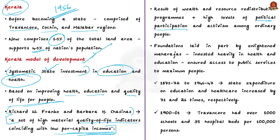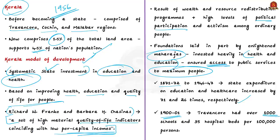The foundations of this holistic development model were laid in part by the enlightened Maharajas of the Kerala region, who invested heavily in health and education and ensured access to public services for maximum people. Between 1871-72 and 1946-47, state expenditure on education increased by 71 times, while expenditure on healthcare increased by 26 times. By the 1900s, Travancore had over 1,000 schools — more than half run by private management — and 35 hospital beds per 1 lakh persons.